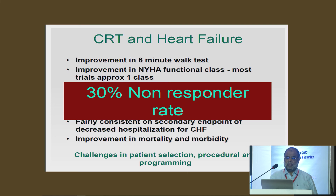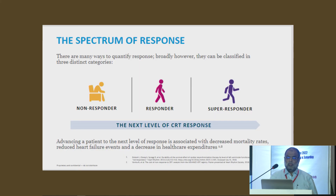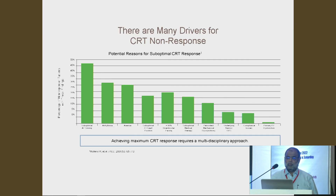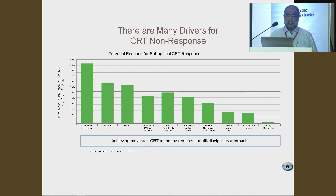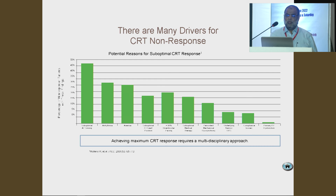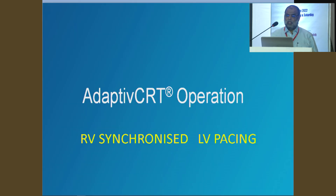After implantation, 30% of patients are non-responders. There are non-responders (30%), responders, and super-responders (10 to 20%). Causes of non-response include suboptimal programming, arrhythmia, anemia, and lead position — the most common causes of non-response.